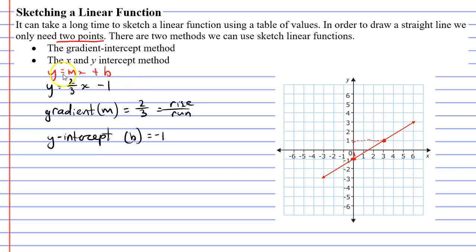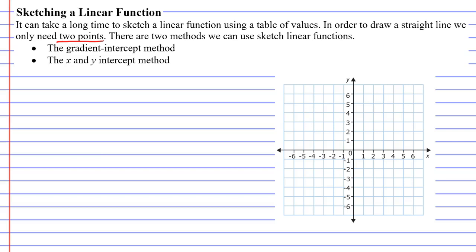This worked really well because the equation was already in gradient intercept form, which made the gradient intercept method easy to use. But what if I had an equation that wasn't in gradient intercept form — say it was in general form? Let's clear the page and bring up a new function, and use the x and y intercept method instead.